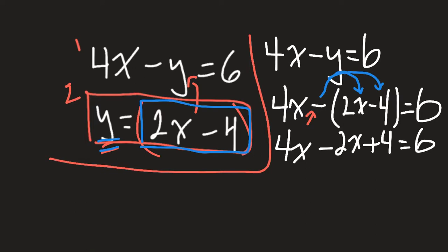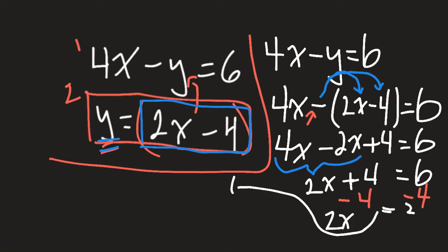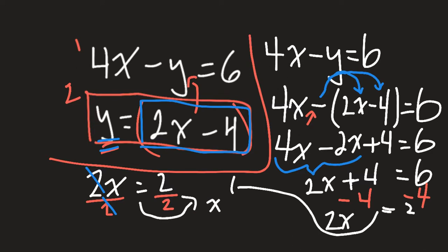Now I can take care of my like terms — I can add or subtract like terms. What's 4x minus 2x? That's 2x. So 2x plus 4 equals 6. I can now subtract 4 from both sides, and I get 2x equals 2. I'm going to divide by 2 to get x by itself, which also means I divide the other side by 2, which means x equals 1.